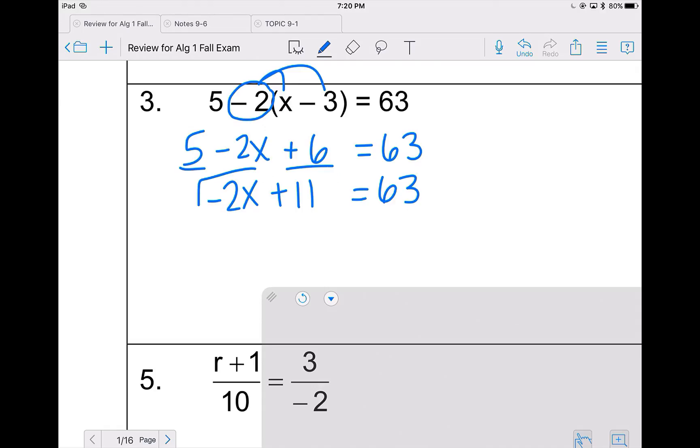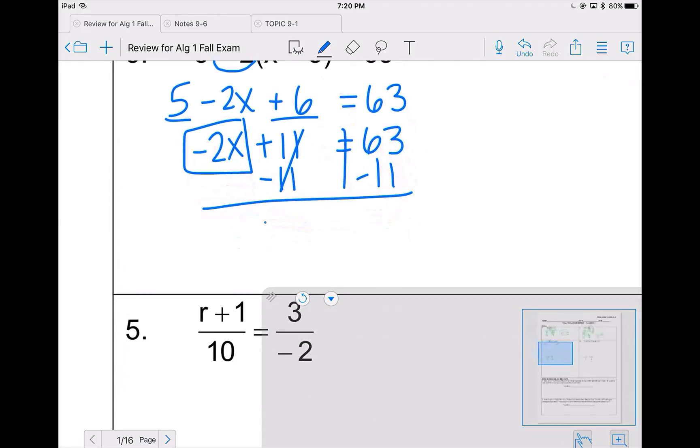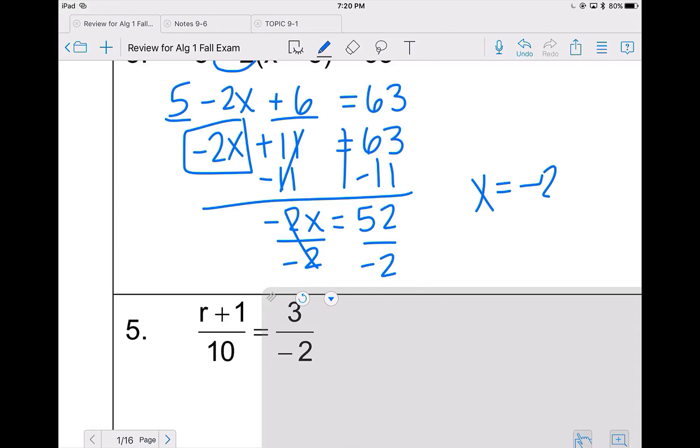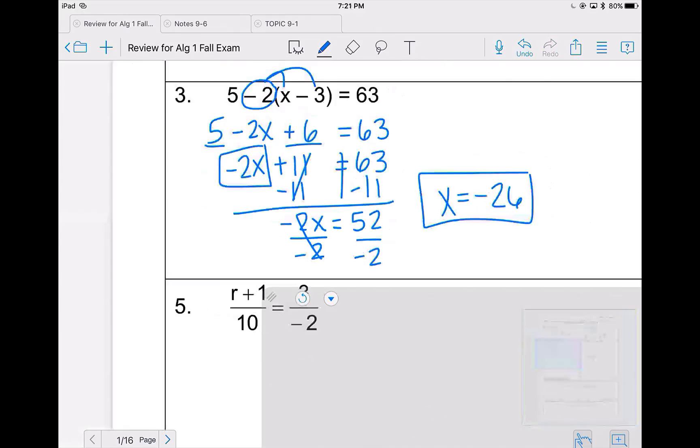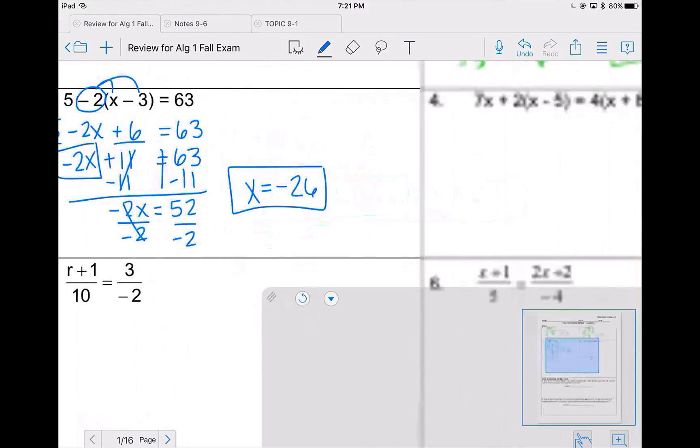To move the 2x, I subtract 11 from both sides. So negative 2x equals 52. Divide by negative 2, and x equals negative 26. Again, in order to check, you can plug in 26 for x and do 5 minus 2 parentheses negative 26 minus 3. Put it in exactly like you see it and make sure you get 63.